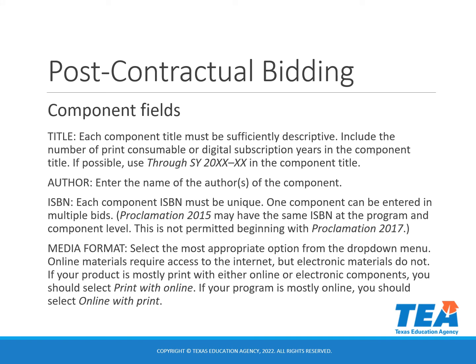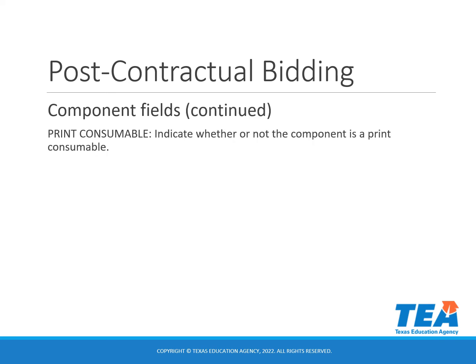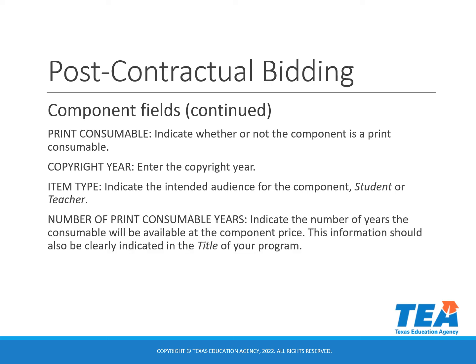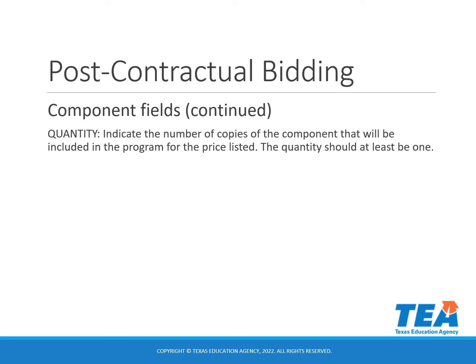In the media format, you will select the most appropriate option from the drop-down menu. In the print consumable field, you will indicate whether or not the component is a print consumable, then enter the copyright year. In the item type, you will indicate the intended audience for the component — either student or teacher. In the number of print consumable years field, you will indicate the number of years the consumable will be available at the component price; this information should also be clearly indicated in the title. In the quantity field, you will indicate the number of copies of the component included in the program for the price listed — the quantity should be at least one.